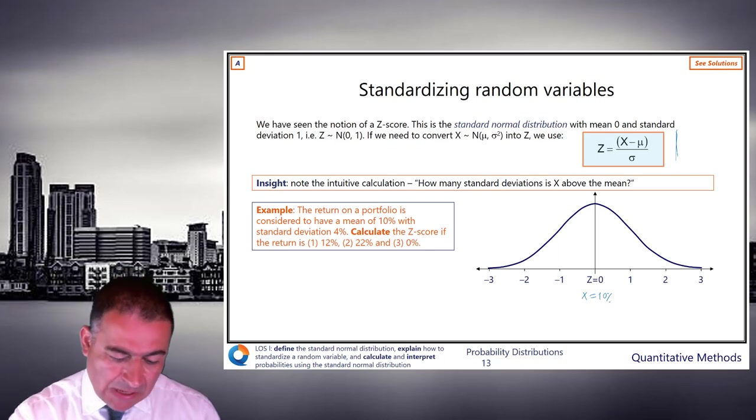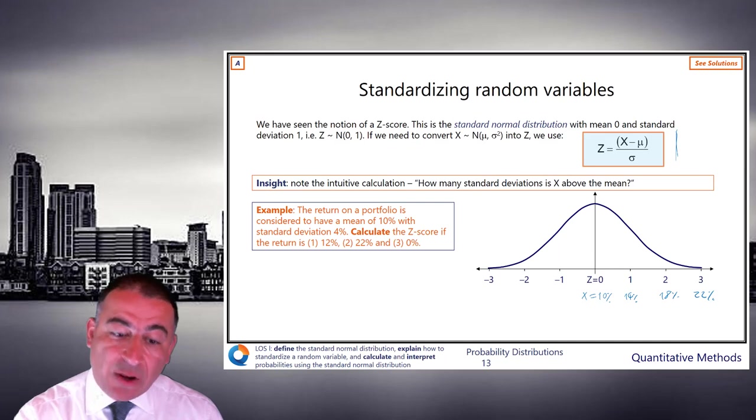Hopefully what you've done is you've said, well, one standard deviation is 4%. So z equals 1, x is going to be 14%, and then 18%, and 22%.